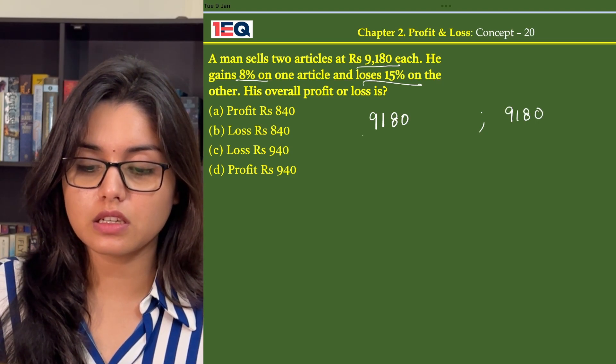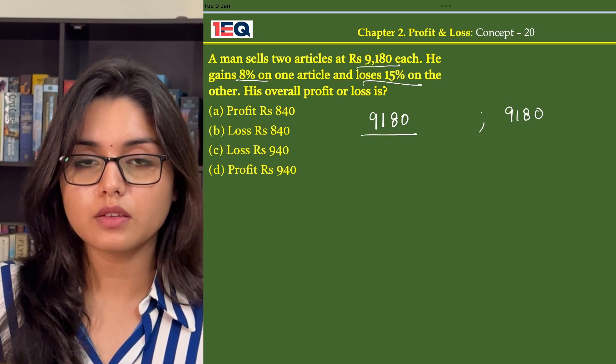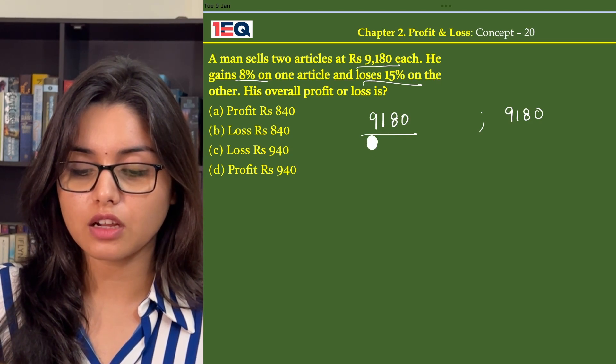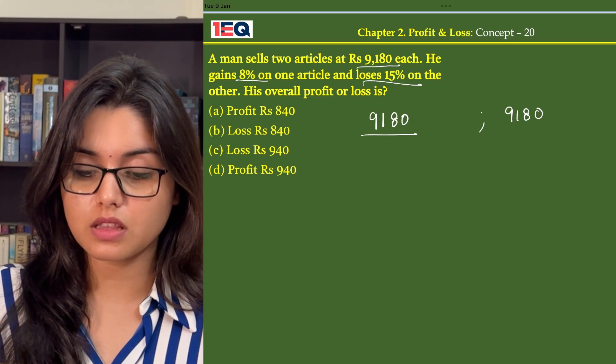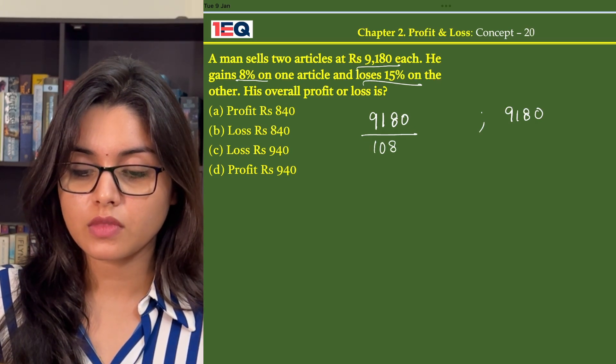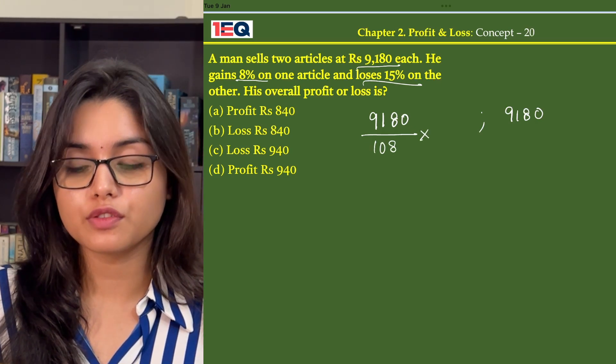In case of the first article, he earns a profit of 8%. That means he is selling it at 100, that is his total cost plus 8%, that is 108, and is having a profit of Rs 8.